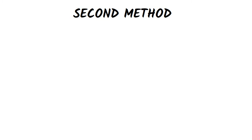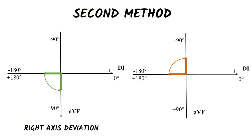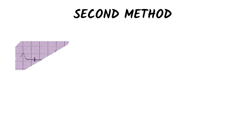If the QRS complex is negative in lead 1 and positive in lead AVF, it means the axis is somewhere between plus 90 and plus 180 degrees, so right axis deviation exists. If the QRS complex is negative in both lead 1 and AVF, it means the axis is somewhere between minus 90 and minus 180 degrees, so extreme right axis deviation exists.